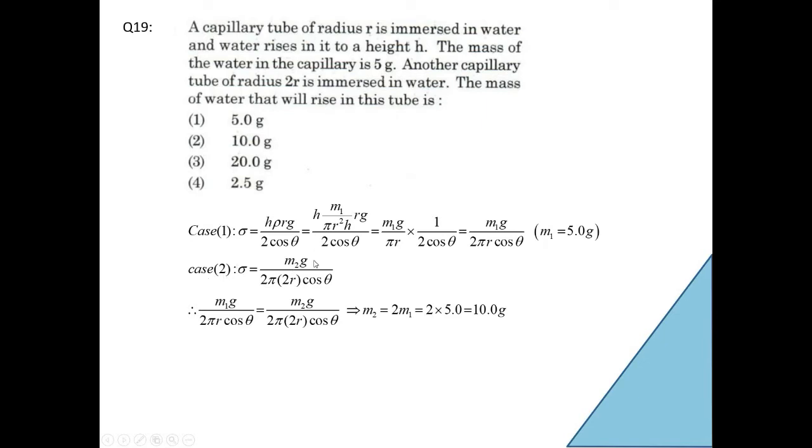Similarly for case 2, sigma is equal to m2 g by 2 pi into 2r because it is given 2r this time, of course cos theta. But both of them are equal. Both of them are giving the surface tension of water. Therefore you can equate this and this. So m1 g by 2 pi r cos theta equals m2 g by 2 pi 2r cos theta. Cancel out the common quantities. So you will get m2 is equal to this 2 will go to that side. So 2 m1. M2 equals 2 m1. Given m1 is 5.0 g. Multiply by 2, 10.0 g. So the answer is option 2.